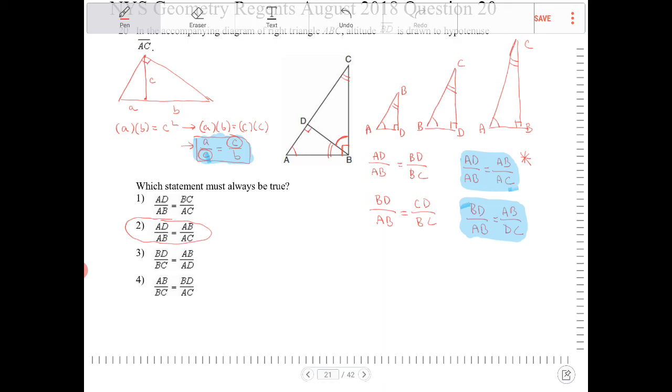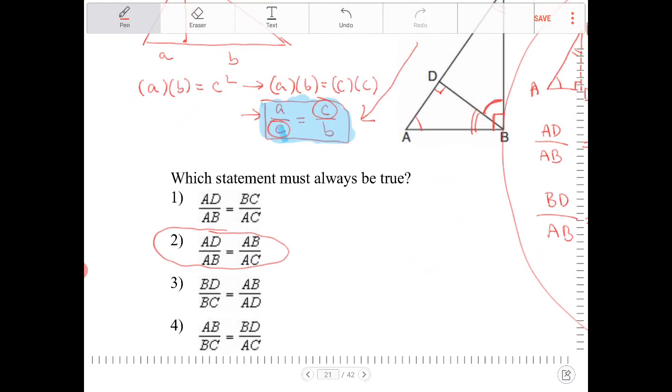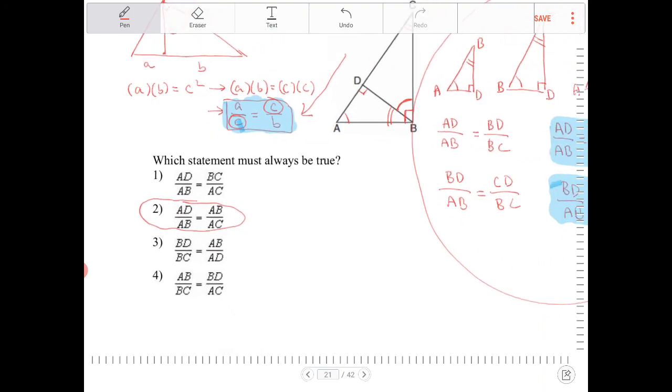But the point is, we could have actually looked at the answer choices without having to go through everything that I just drew over here, just recognizing this relationship, and we can sort of fish out that it's the denominator and numerator, the denominator of one fraction having equivalent values as the numerator in the other.